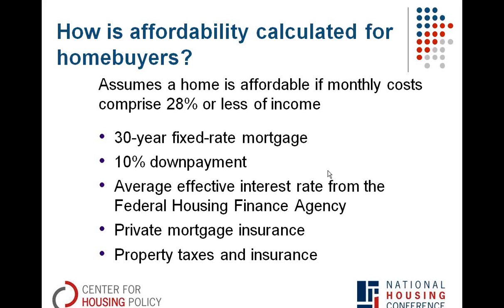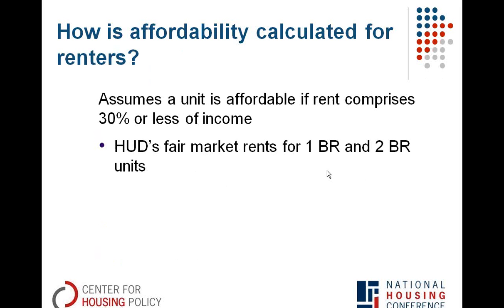In terms of how affordability is calculated for renters, we use the standard assumption of affordability if housing costs comprise 30% or less of income, and we use HUD's fair market rents to get an idea of typical rents for one-bedroom and two-bedroom units. For both home buying and renting, we assume that there's one worker per household — in about 40% of households across America, the household is headed by one worker.